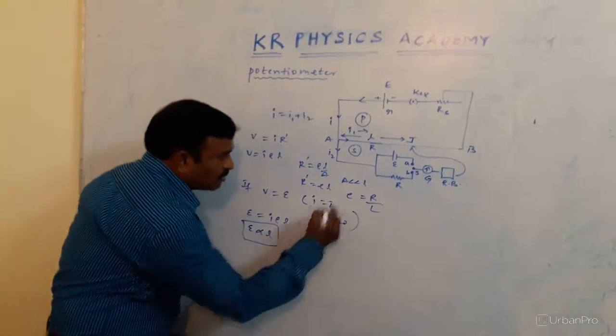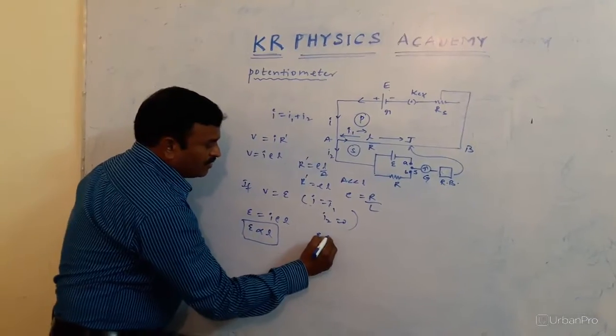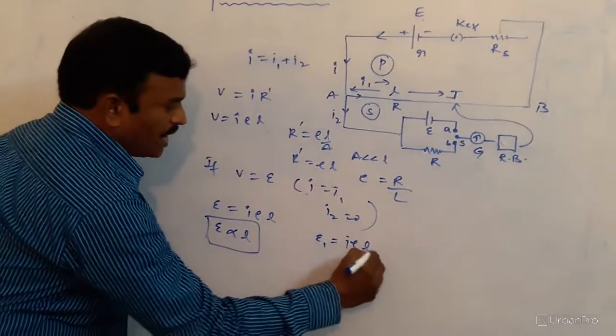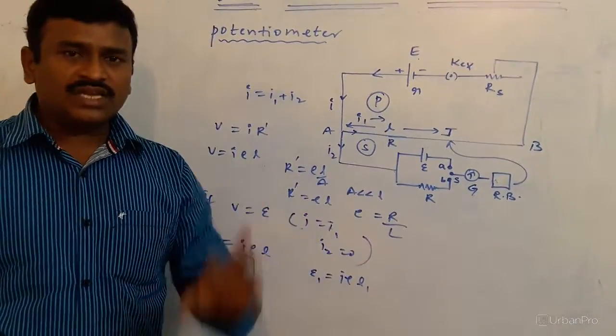Then, how to determine? To determine the EMF of the secondary cell, the same process: E1 is equal to I ρ L1. We need to say that first one cell is a known cell to be taken.